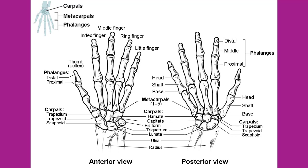A simple mnemonic for remembering the arrangement of the carpal bones is: 'So long to pinky, here comes the thumb.' This mnemonic starts on the lateral side and names the proximal bones from lateral to medial — scaphoid, lunate, triquetrum, and pisiform — then makes a U-turn to name the distal bones from medial to lateral: hamate, capitate, trapezoid, and trapezium. It starts and finishes on the lateral side.